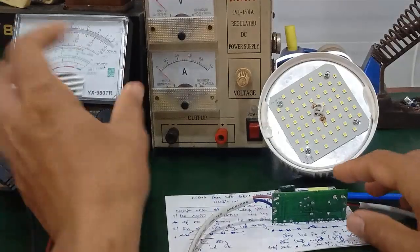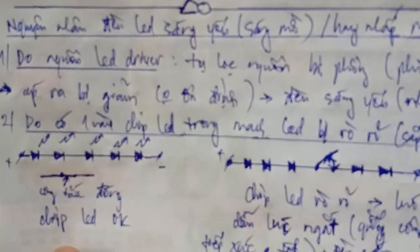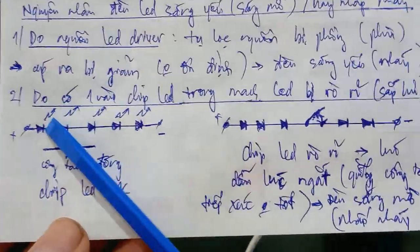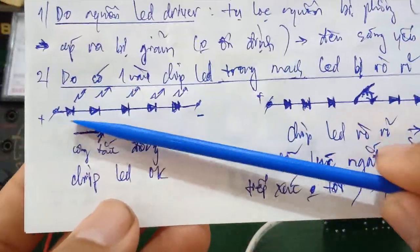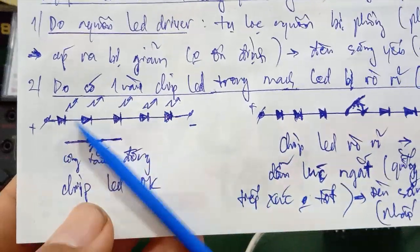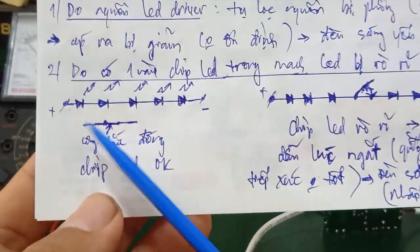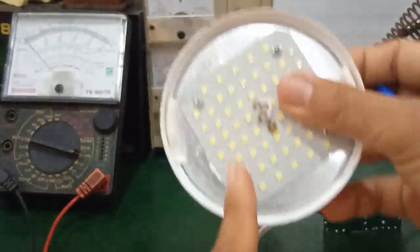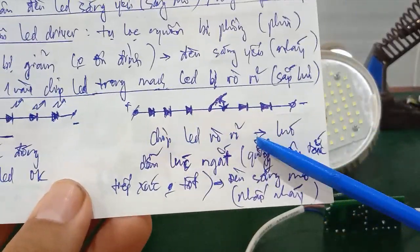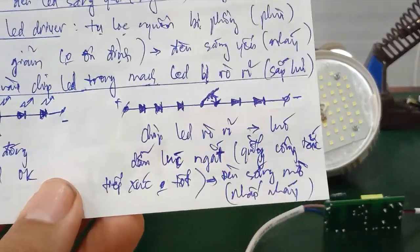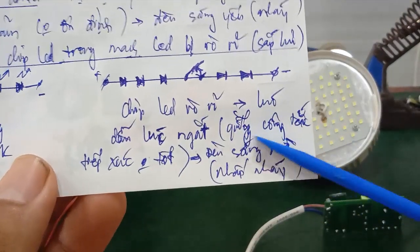Vấn đề thứ hai là nguyên nhân do chip LED bị rò rỉ. Quan sát trên vỉ LED, có một vài con chip LED trong mạch bị rò rỉ — tức là sắp hư. Trong một dãy LED mắc nối tiếp, khi chip LED bị rò rỉ, nó giống như một công tắc tiếp xúc không tốt, dẫn và ngắt liên tục — chập chờn.